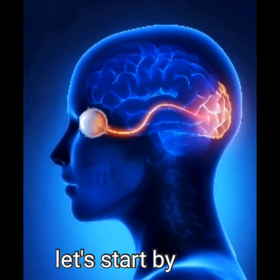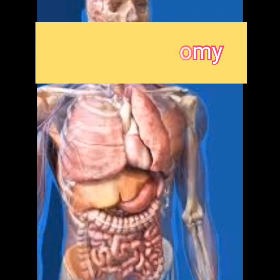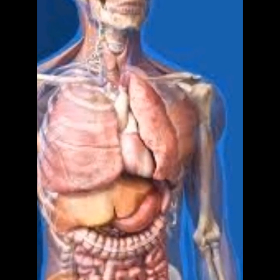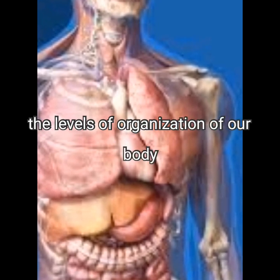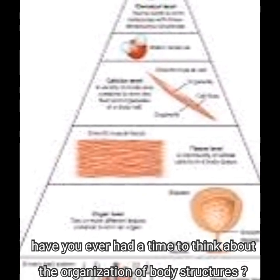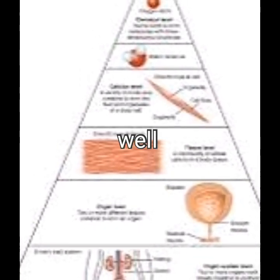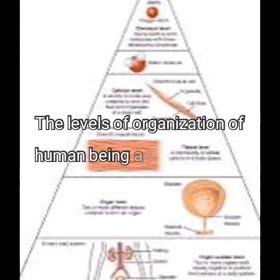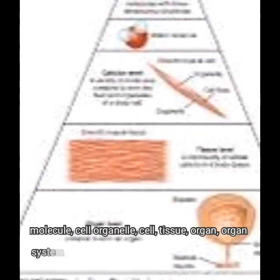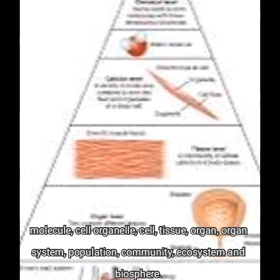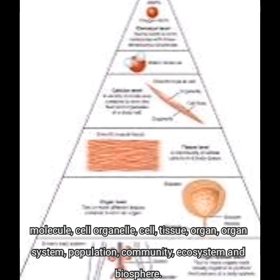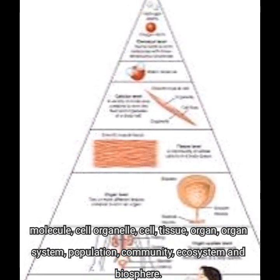Let's start with human anatomy. Human anatomy studies the structure of the human body. Have you ever had time to think about the organization of the human body structure? The levels of organization of human beings as an organism, from the smallest to largest, are: molecule, cell, tissue, organ, organ system, population, community, ecosystem, and biosphere.